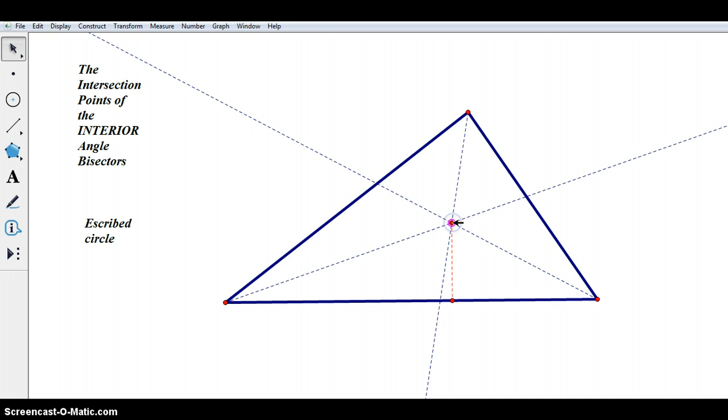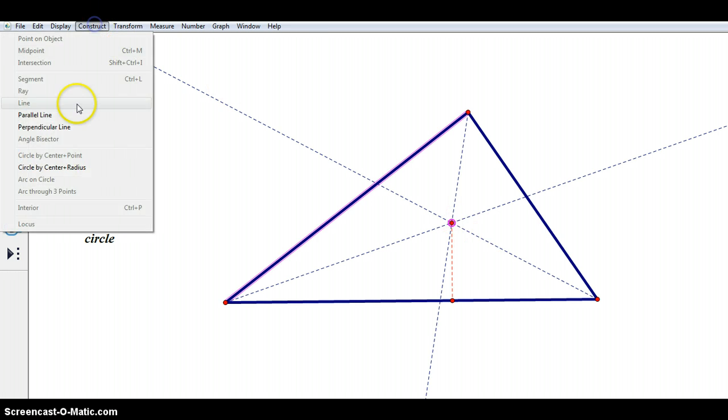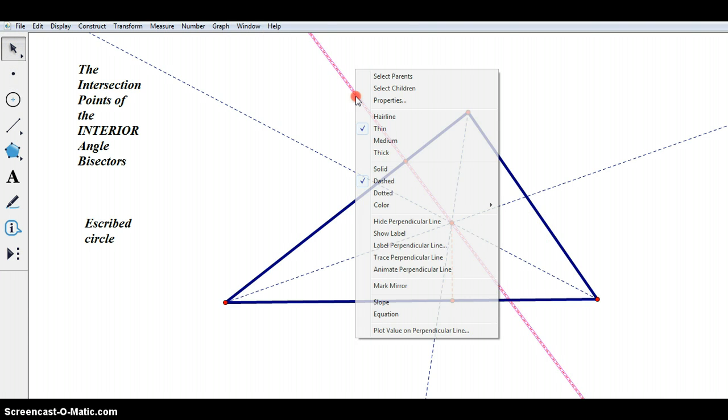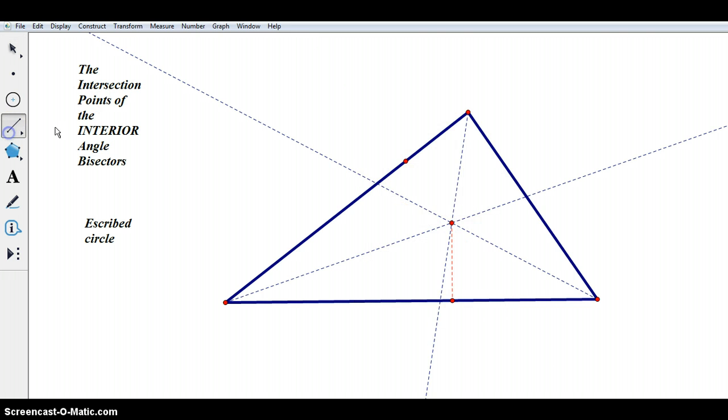Let's do the same thing then for the other side. Let's construct the perpendicular line. Super. Let's mark on where it intersects. And let's hide the line again. Hide perpendicular line. And then, let's draw. There we go. There's our perpendicular distance.